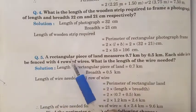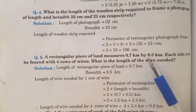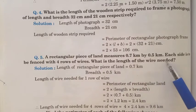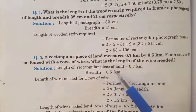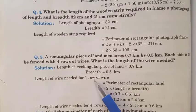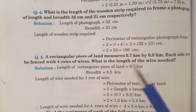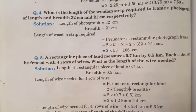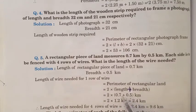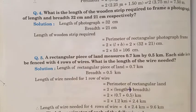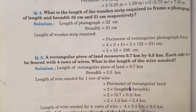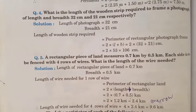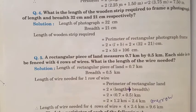Solution 5: A rectangular piece of land measures 0.7 km by 0.5 km. Each side is to be fenced with 4 rows of wire. What is the length of the wire needed? Length is 0.7 km, breadth is 0.5 km. Perimeter is 1.2 km into 2 equals 2.4 km for 1 row. For 4 rows: 4 into 2.4 km equals 9.6 km.